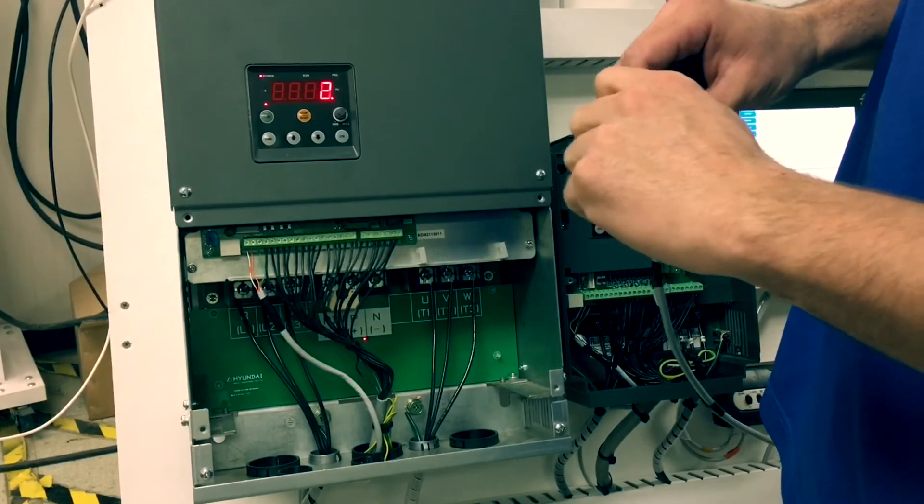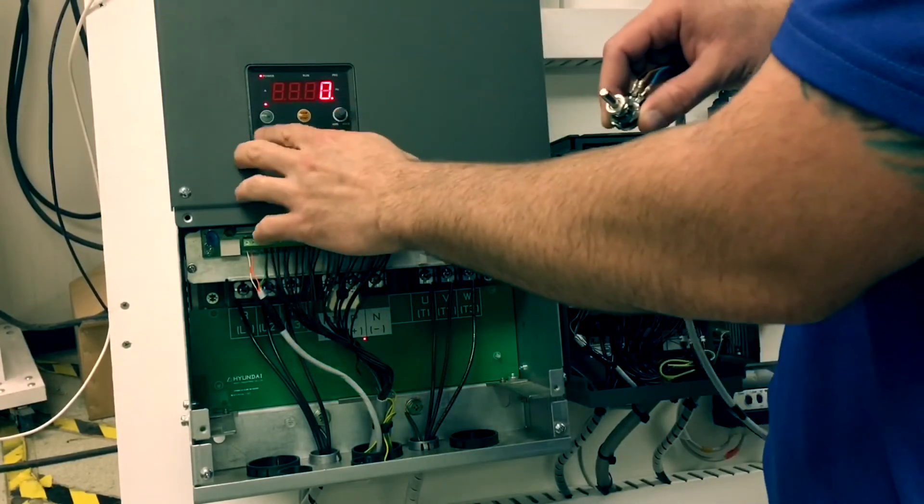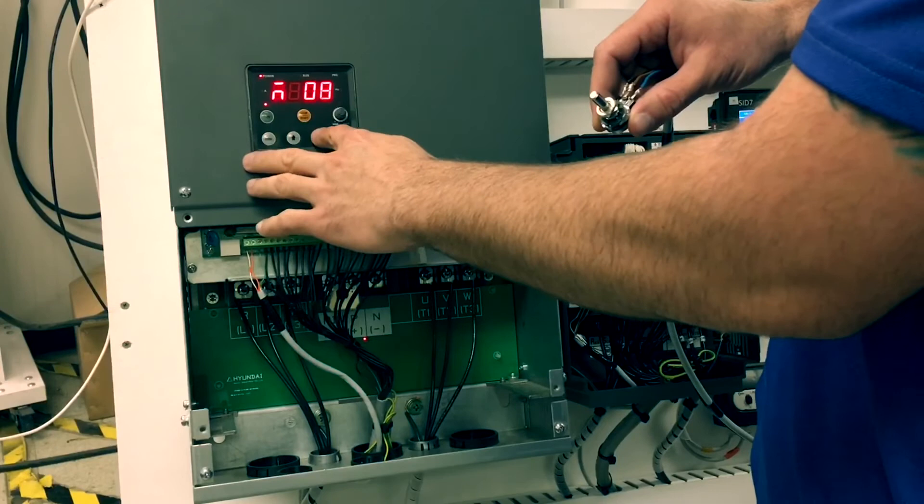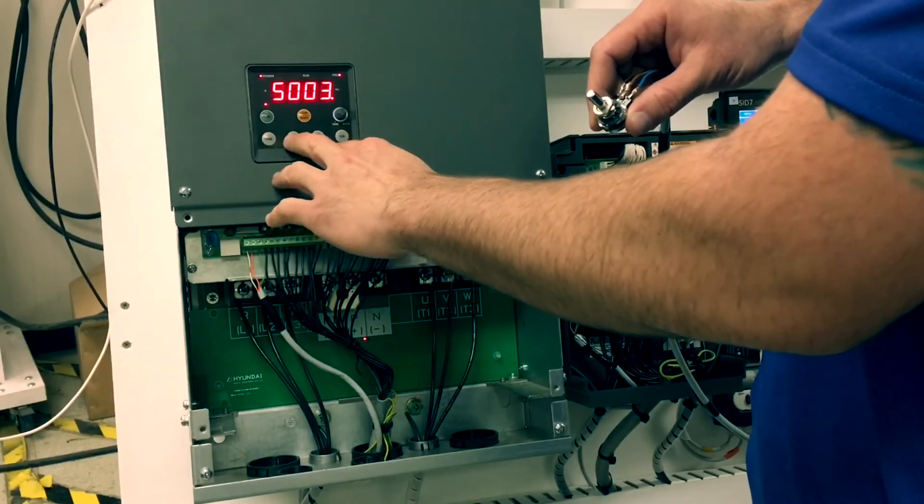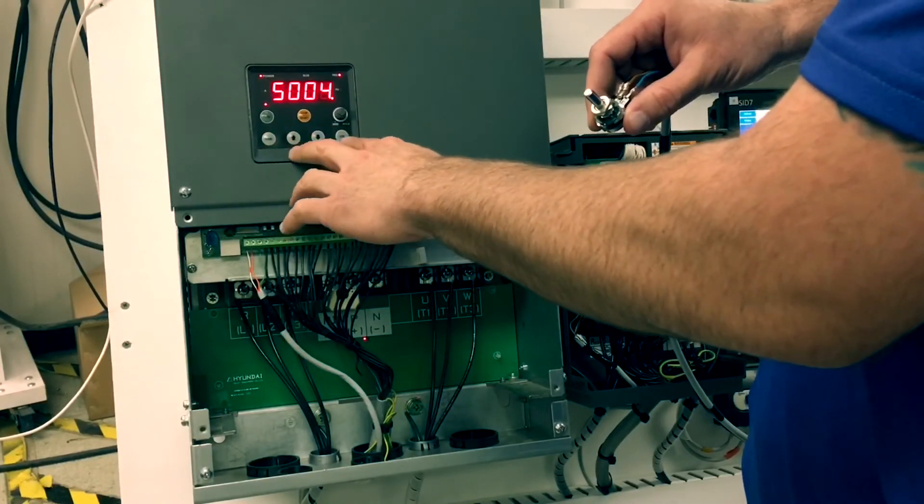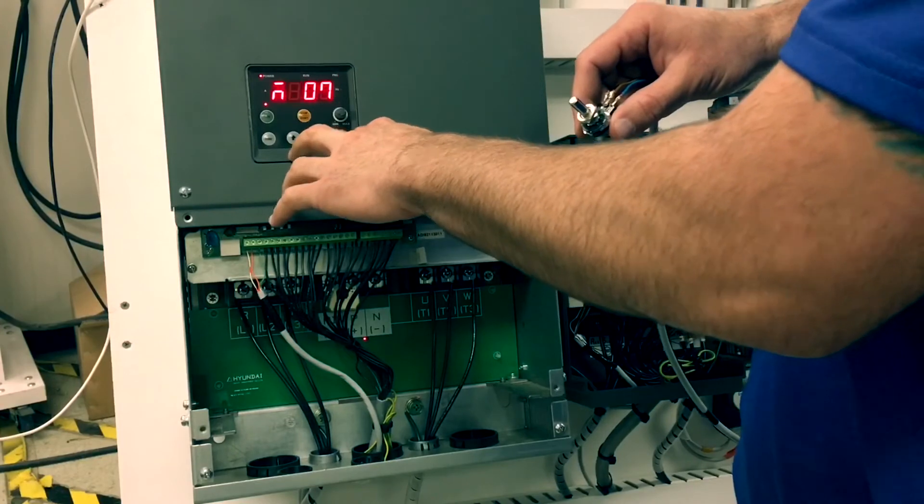To correct this, start at 0 volts on the speed potentiometer. Access M07 and dial up accordingly. Check M09 to make sure we are at 0.